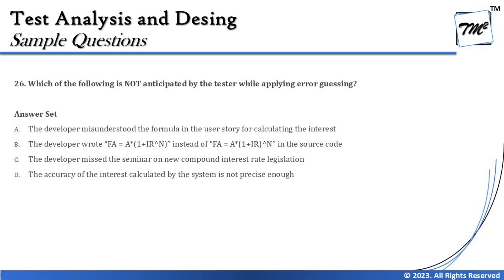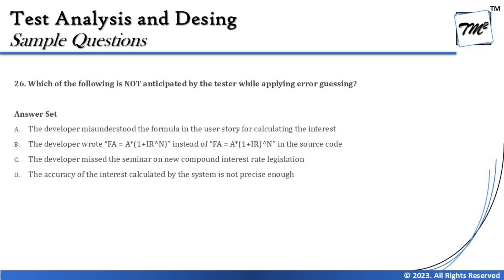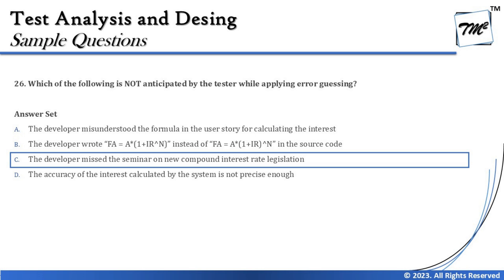Option D says: the accuracy of the interest calculated by the system is not precise enough — that is a good example of anticipating a failure, based on experience with previous systems or past developer mistakes. So the right answer to question 26 is C: the developer missed the seminar on new compound interest rate legislation, as this is not an anticipation made by the tester to guess errors.